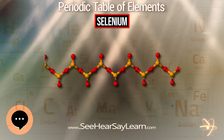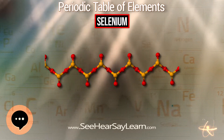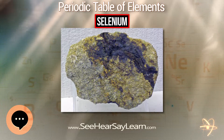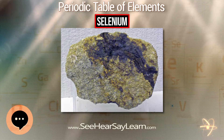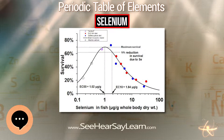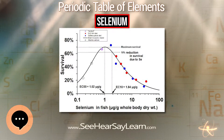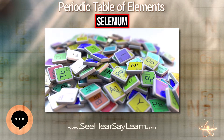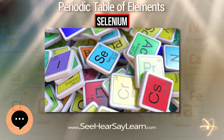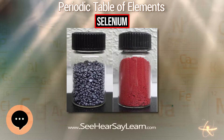In X-ray crystallography, incorporation of one or more selenium atoms in place of sulfur helps with multiple wavelength anomalous dispersion (MAD) and single wavelength anomalous dispersion (SAD) phasing. Selenium is used in the toning of photographic prints and is sold as a toner by numerous photographic manufacturers. Selenium intensifies and extends the tonal range of black-and-white photographic images and improves the permanence of prints. 75Se is used as a gamma source in industrial radiography.